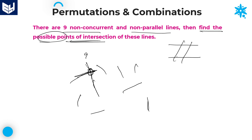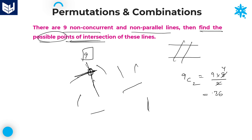Out of these 9 lines, how many points of intersection will be formed? We are selecting two lines out of 9 because a point of intersection requires exactly two lines. Number of points of intersection equals 9C2, which is 9 into 8 divided by 2, that is 36. So 36 points of intersection will be formed by using 9 non-concurrent and non-parallel lines. 36 is the required answer.